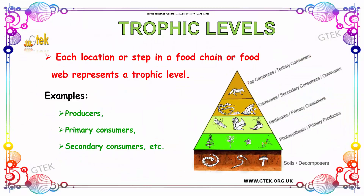Now we are going to see about the trophic levels. In trophic levels, each location or step in a food chain or food web represents a trophic level. Examples of trophic levels are producers, primary consumers, secondary consumers, and so on.